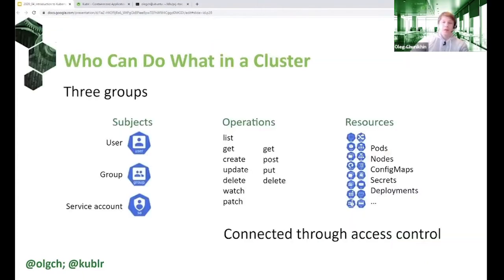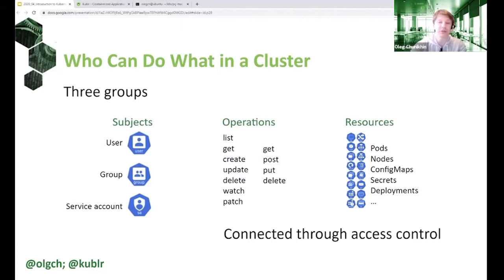So let's start — what is RBAC and what is access control in Kubernetes? It is essentially a set of tools and features that allow the Kubernetes operator or administrator to define who can do what in a Kubernetes cluster. There are three main concepts: subjects, operations, and resources. Subjects represent who performs an operation in a Kubernetes cluster through the Kubernetes API. An operation is the action that person or component wants to perform. A resource is the thing inside the cluster that the action is performed on.